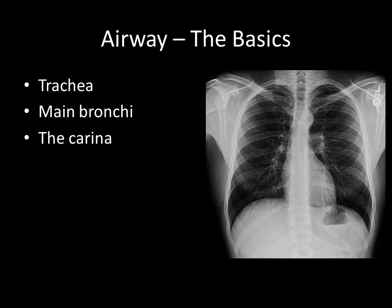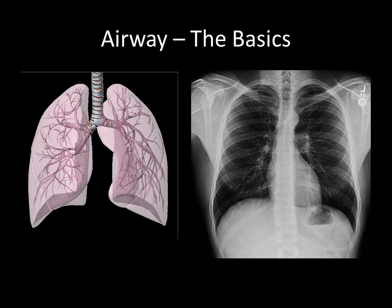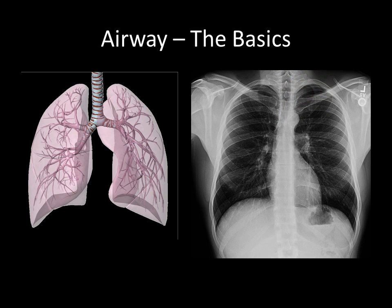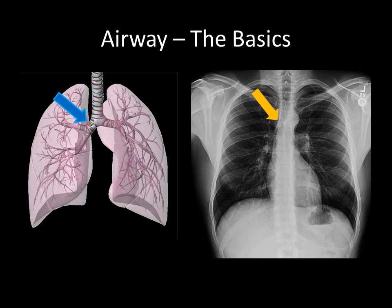We'll cover some of the basic airway anatomy: the trachea, the main bronchi, and the carina. On the left is a computerized diagram of these structures; on the right is a normal chest film. The trachea runs from superior to inferior, and on the chest film we see it as a hypodense column or cylindrical lucency in the midline. The left main bronchus appears as a curved hypodense column curving into the left lung field. The right main stem bronchus also appears as a curving hypodense column, though in this example it's not quite as visible. The carina is approximately located here on the chest film — a cartilaginous structure running from anterior to posterior that divides the trachea into the left and right main stem bronchi.